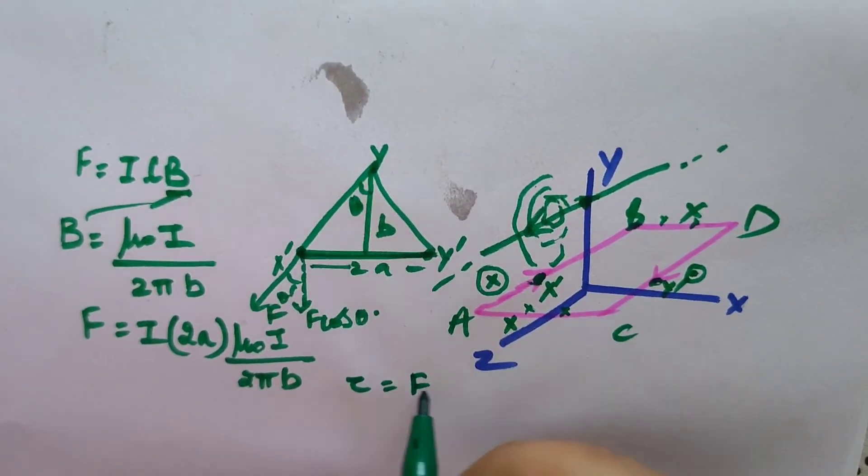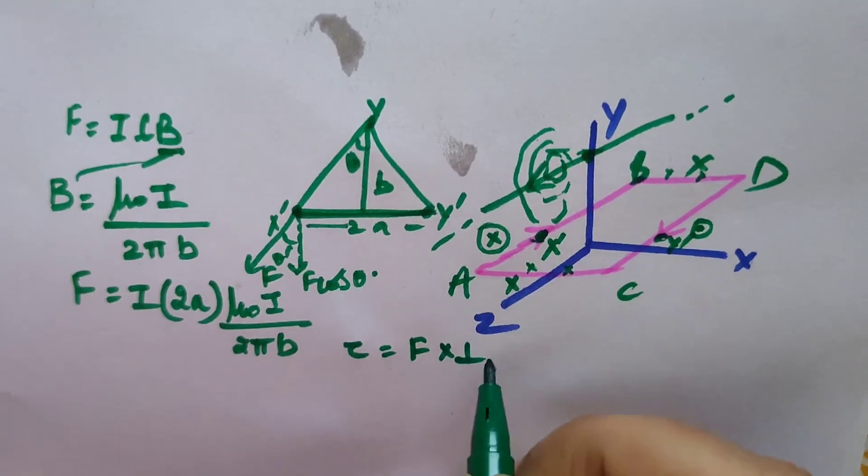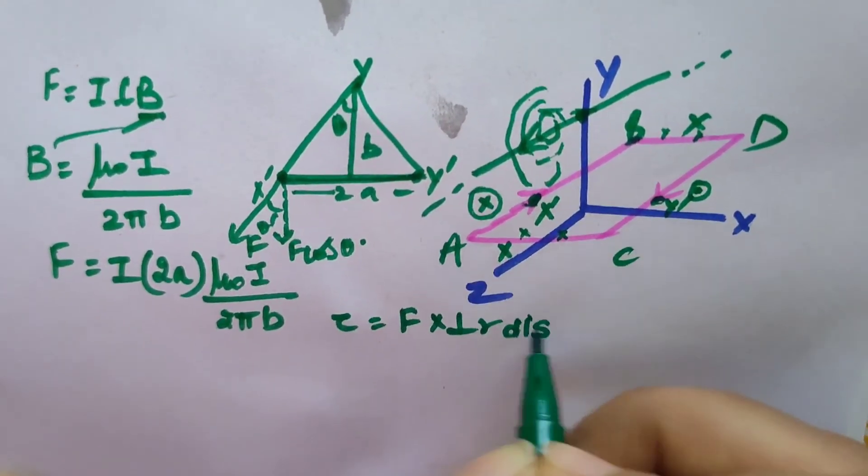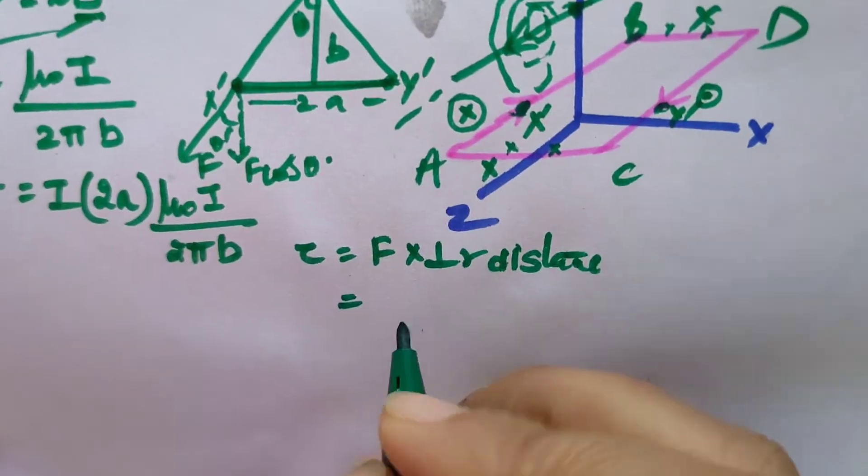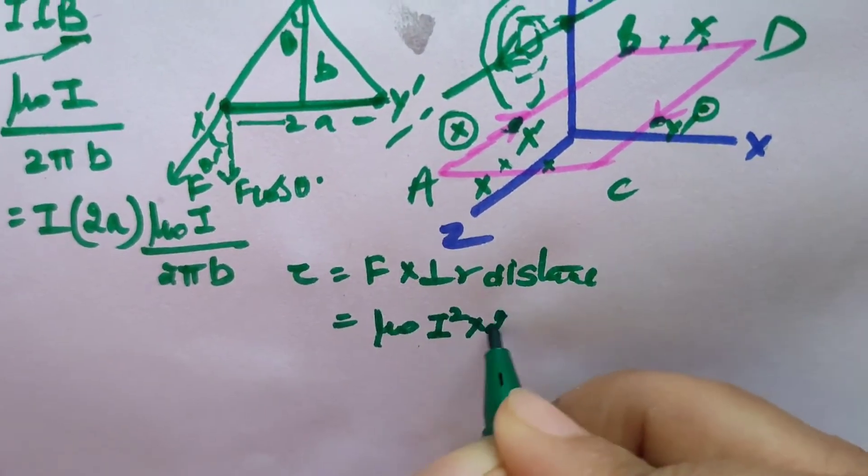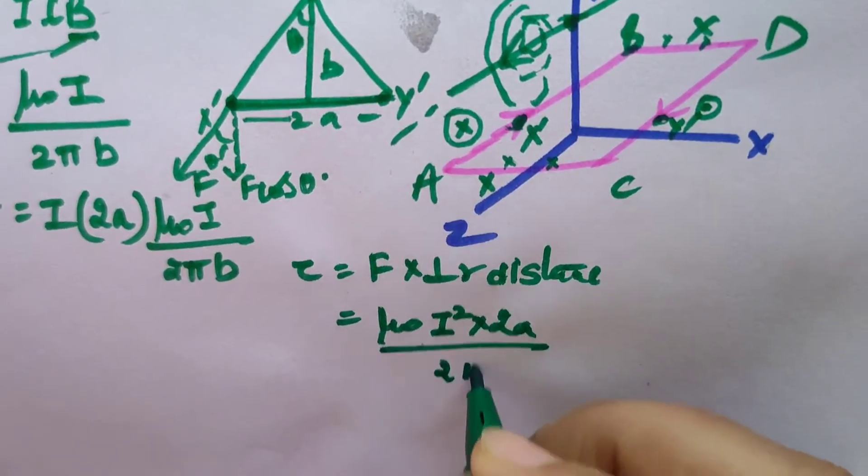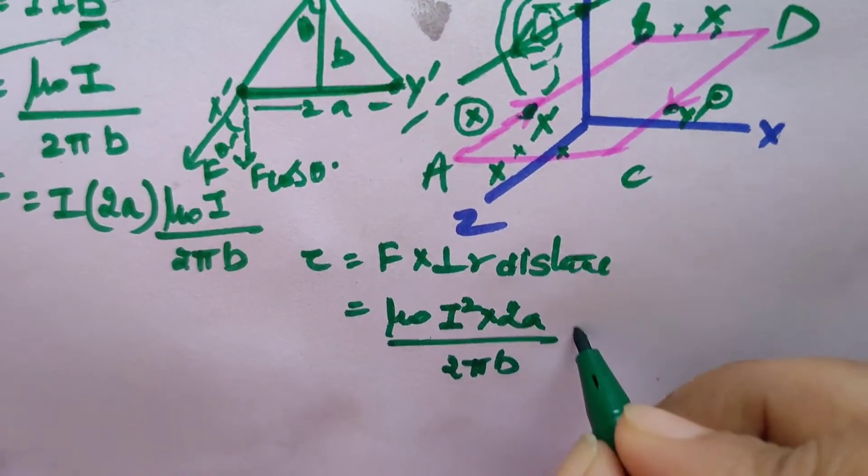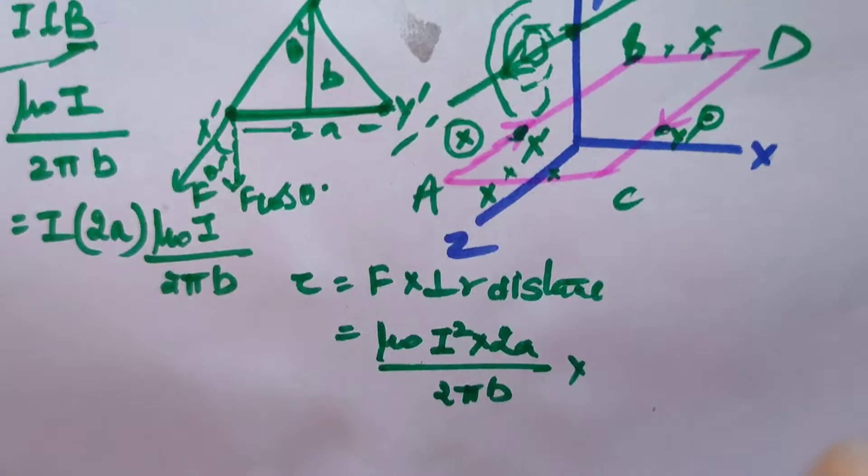If you want to calculate torque, torque is equal to force into perpendicular distance. What is the force here? Force is μ₀I² × 2a/(2πb). And what is the perpendicular distance here? Perpendicular distance is 2a.